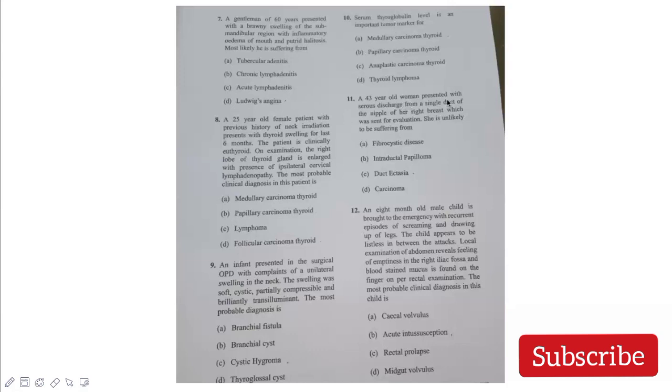Serum thyroglobulin level is an important tumor marker for papillary thyroid carcinoma. For medullary thyroid carcinoma, it's calcitonin. So for papillary thyroid carcinoma, it's thyroglobulin. A 43-year-old woman presented with serous discharge from a single duct of nipple in her right breast. If the discharge is from a single duct, it's intraductal papilloma, for which we do microdochectomy. But if it's from multiple ducts, that's commonly duct ectasia.